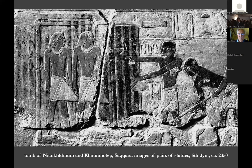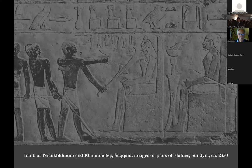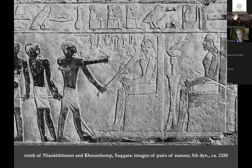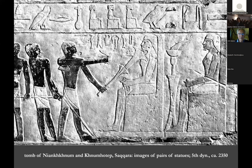Here is another example from the same tomb where statues are also receiving incense and aromas through flowers. These are seated stone statues shown in a completely different way, because the function of a statue of stone is important. But we shouldn't think that this either is going to be a very literal way of understanding things.